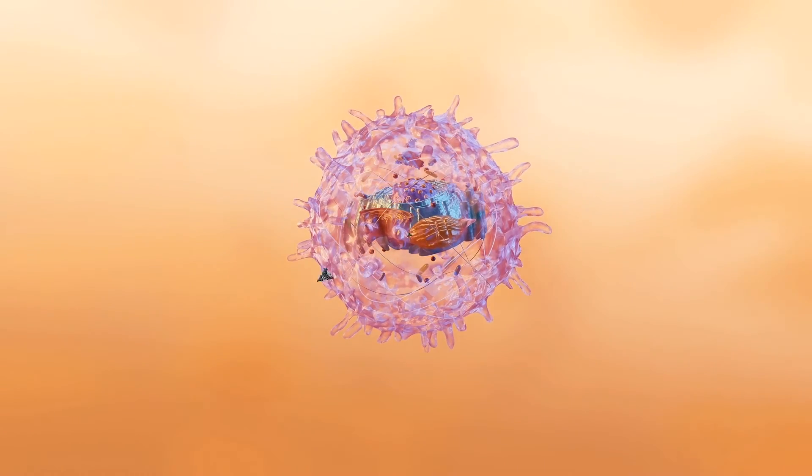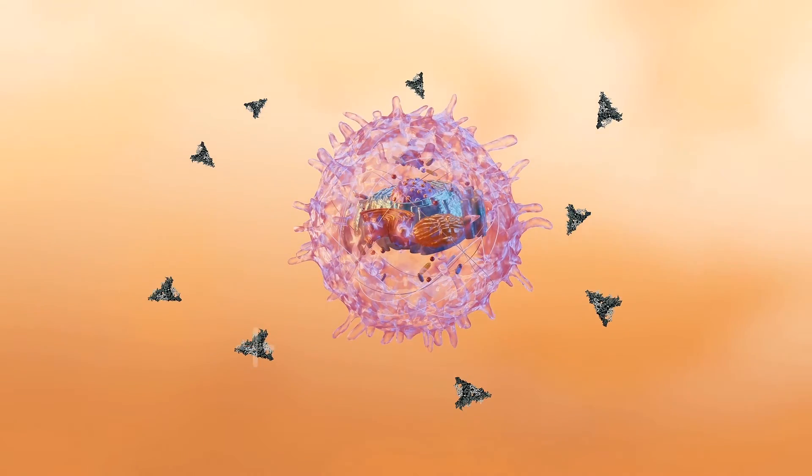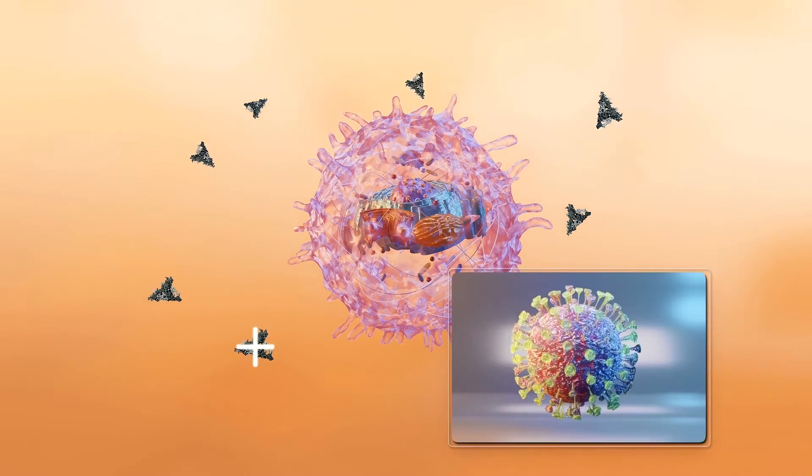After the vaccine is injected, the mRNA orders the body's cells to make proteins that imitate the structure of the coronavirus' spike proteins.